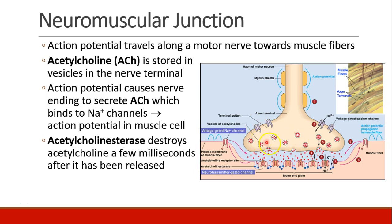The action potential causes the nerve ending to secrete acetylcholine into the neuromuscular junction. The acetylcholine binds to sodium channels, which are on the motor end plate — the beginning of the muscle fiber — and this creates an action potential in the muscle cell. The acetylcholine esterase enzyme, which is bound into the motor end plate, will then destroy acetylcholine a few milliseconds after it's been released and caused its action on the sodium channels.